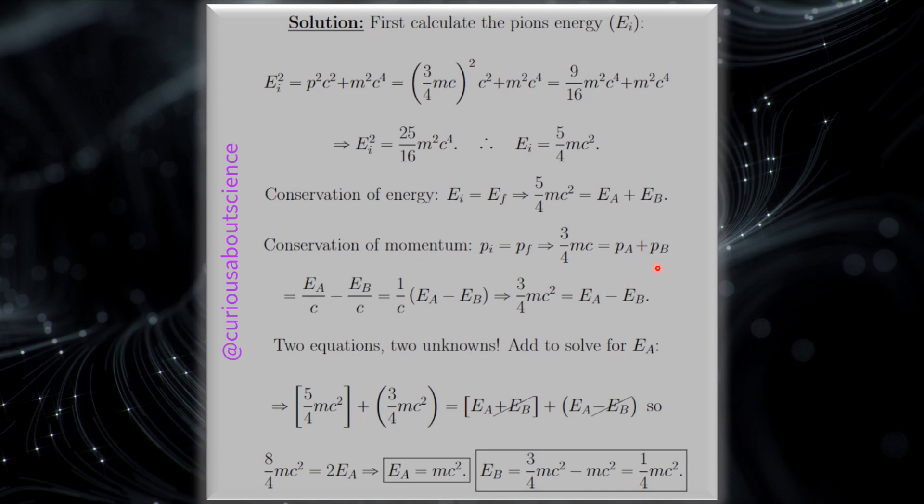So based on the fact that we have the energy of the photon is equal to P times C, we could solve for the momentum, which is E over C. And so what we see here is that we have EA over C minus EB over C because the minus sign came from the fact that one of them had to go in the opposite direction.